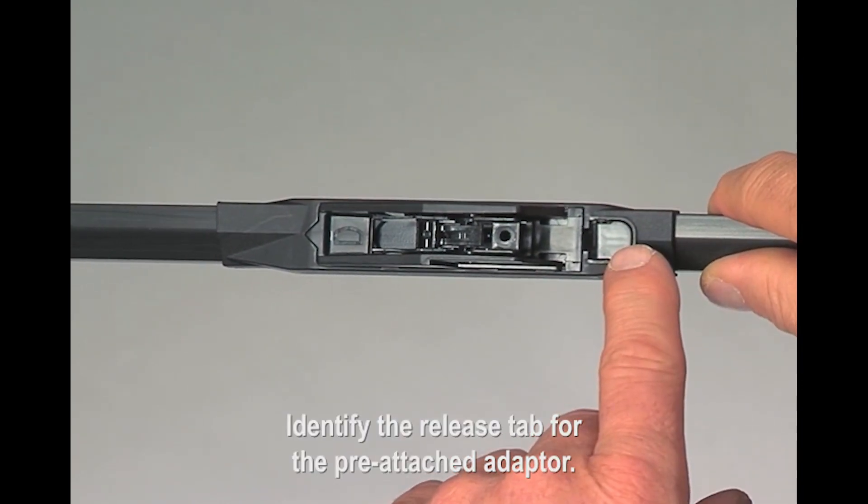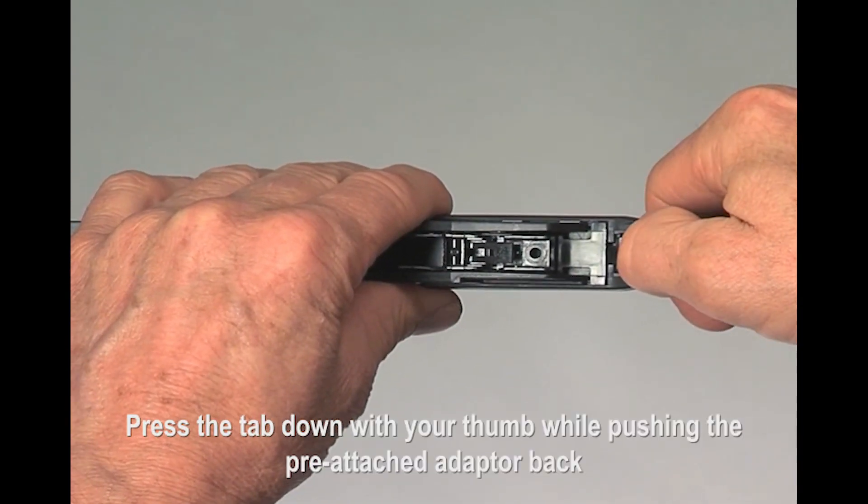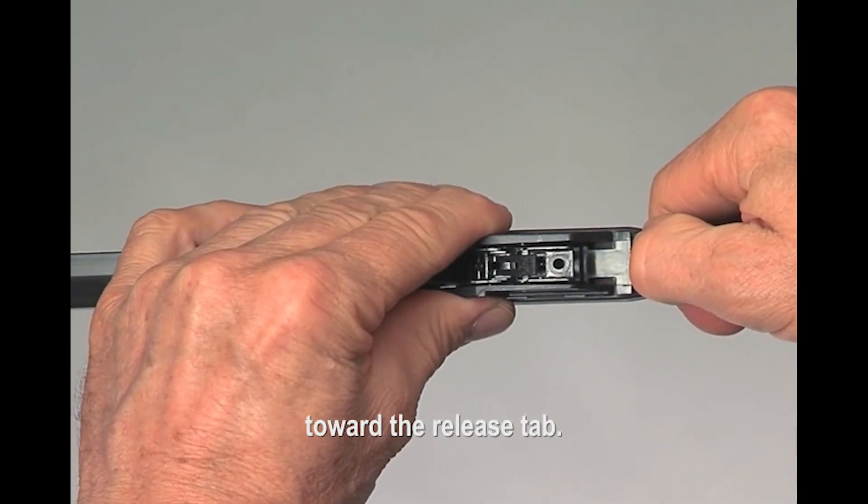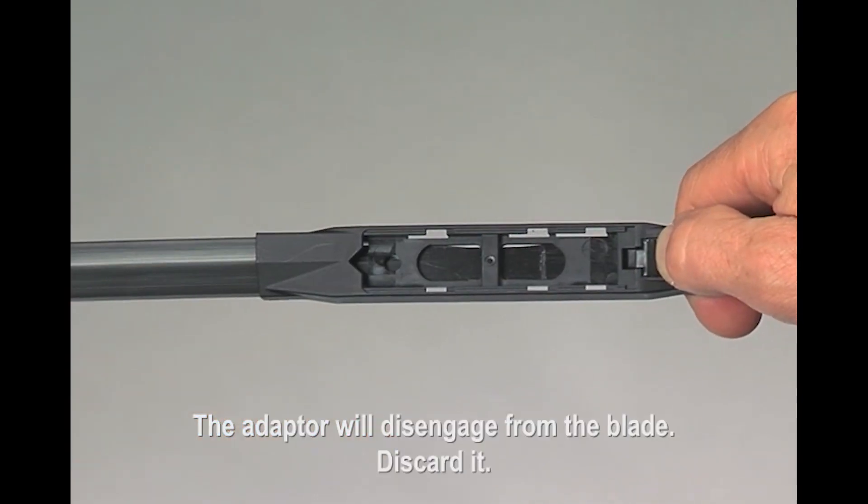Identify the release tab for the pre-attached adapter. Press the tab down with your thumb while pushing the pre-attached adapter back toward the release tab. The adapter will disengage from the blade. Discard it.